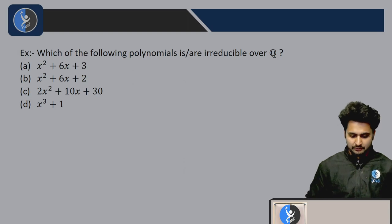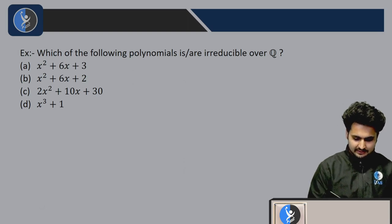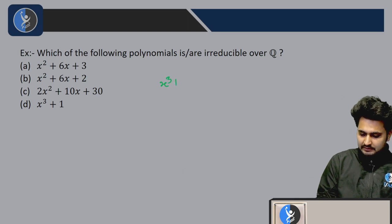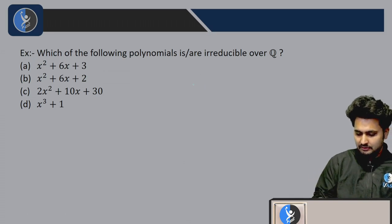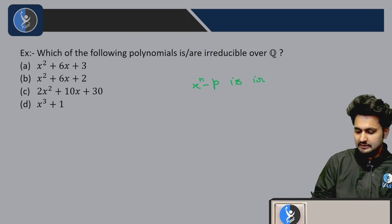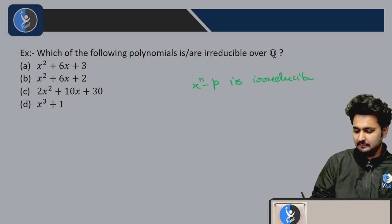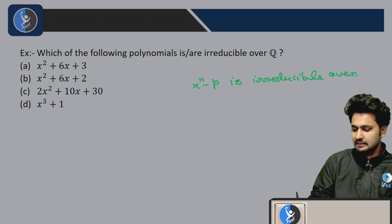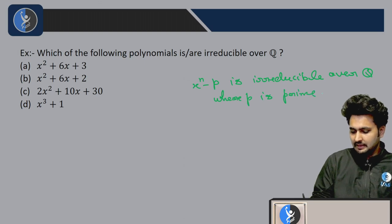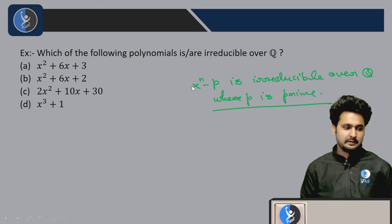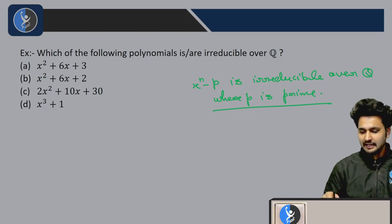Hello and welcome back everyone. If you remember in the last lecture we used x to the power n minus p is irreducible over Q, where p is prime. We've seen that this is irreducible over Q where p is prime.